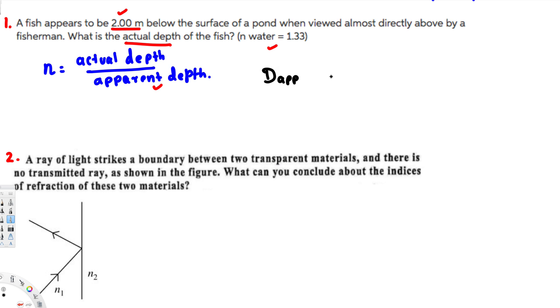So we are trying to calculate actual depth, so let's put actual right here. So D actual is equivalent to n times D apparent, right?